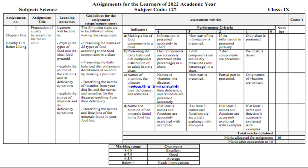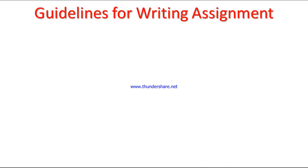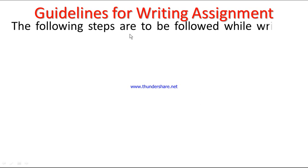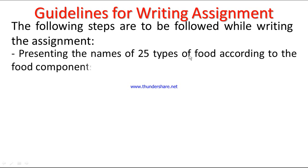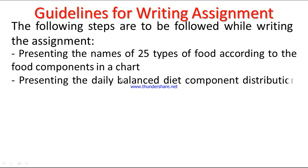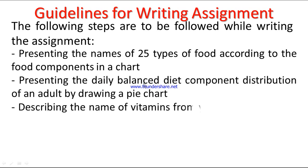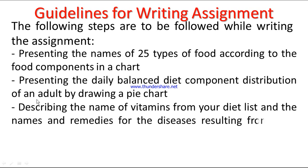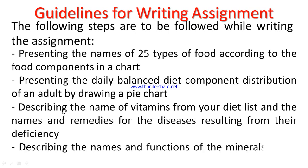Let's see the instructions for the assignment. Guidelines for writing the assignment — the following steps are to be followed: presenting the names of 25 types of food according to food components in a chart; presenting the daily balanced diet component distribution of an adult by drawing a pie chart; describing the names of vitamins from your diet list and the names and remedies for diseases resulting from their deficiency; describing the names and functions of the minerals found in your food list.